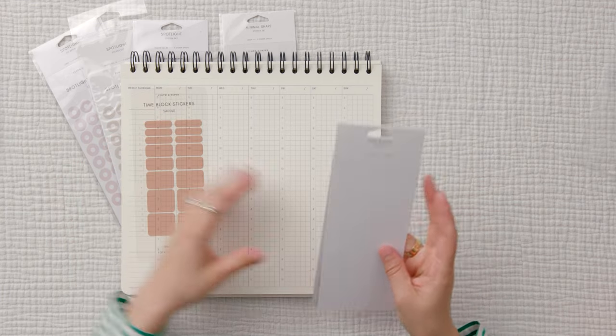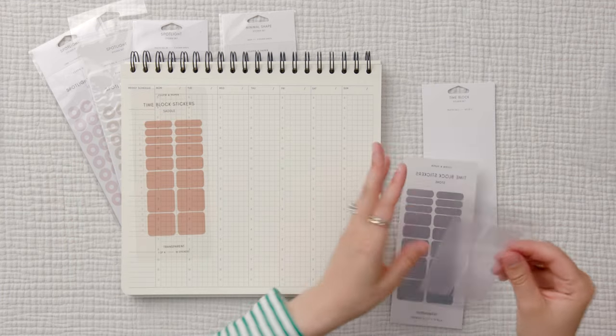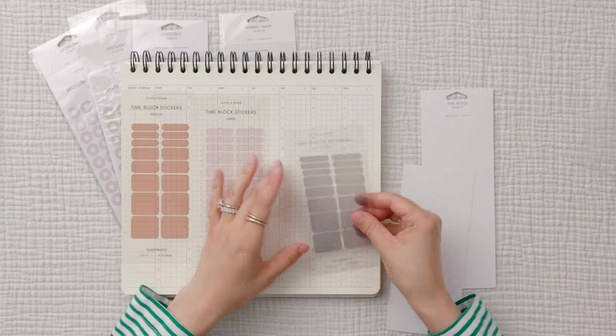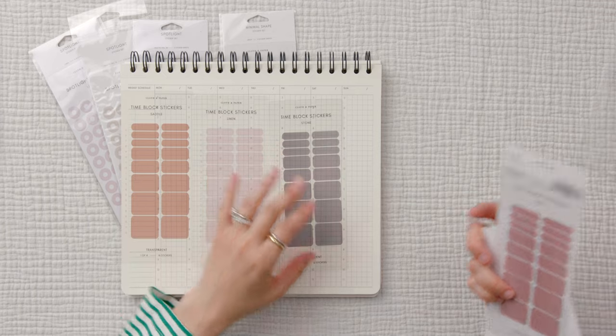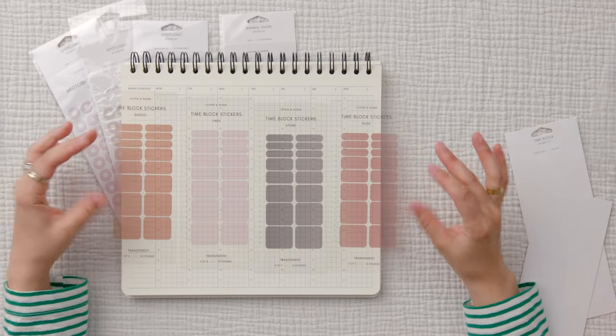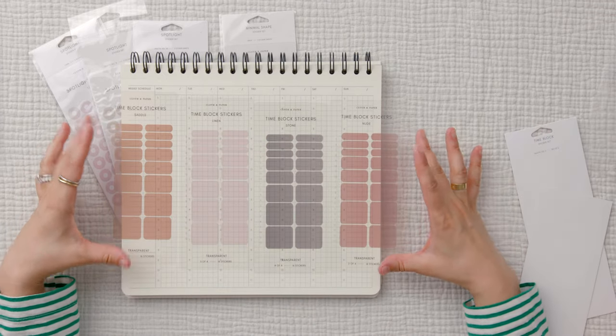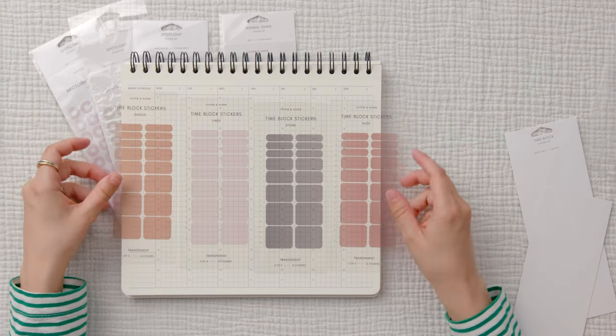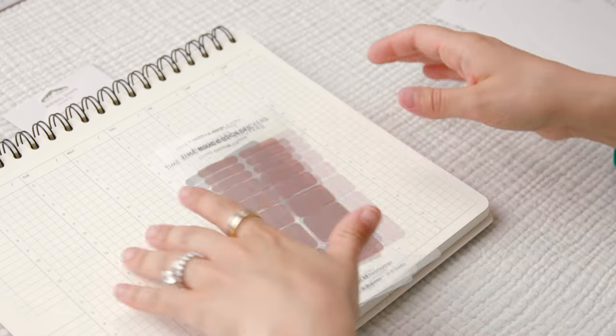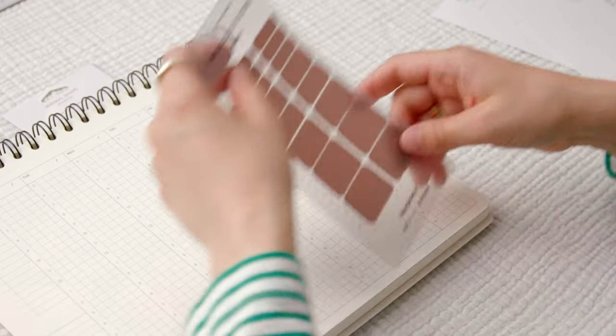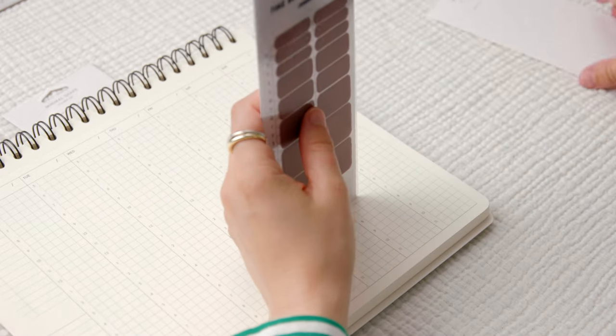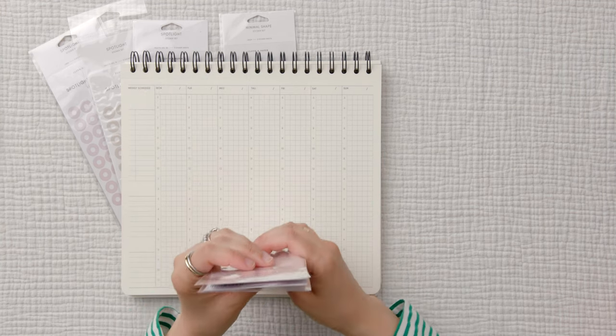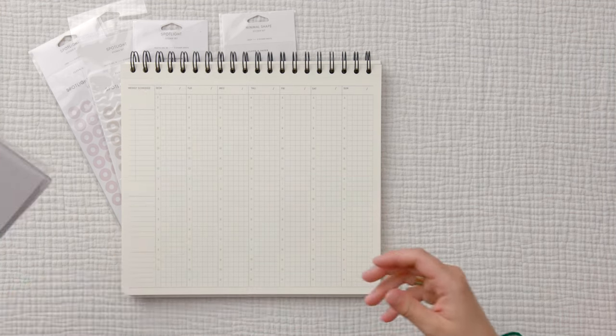We have Saddle, Linen, Stone, and Nude. I feel like this set of stickers here is pretty standard for cloth and paper. I've recognized some of the names of these colors, but I think my favorite would have to be that second set. I have to remember to pick up more of those maybe when they're doing another last call. Hopefully these stickers will be a part of that last call.